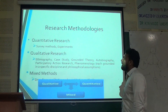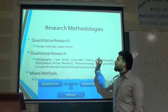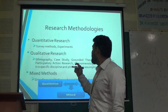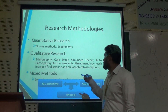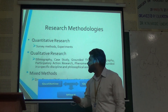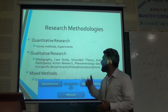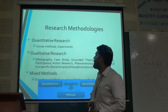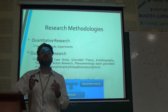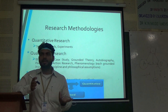In research methodology, there are mainly two types — quantitative and qualitative — and mixed methods. In quantitative research, we use survey methods and experiments. In qualitative research, we use ethnography, case study, grounded theory, autobiography, participatory action research, phenomenology, and observation research. In mixed methods, we combine qualitative and quantitative. In quantitative survey methods, we collect data on the basis of numbers — a set of questionnaires — and respondents respond on a scale of 1 to 5 using a Likert scale.